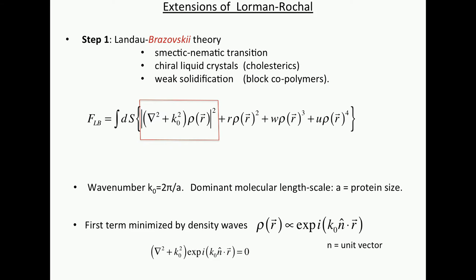And in fact, if you work with nabla squared plus k0 squared on this wave, you just bring down two factors of i k0. That is minus k0 squared, plus k0 squared, and you have 0. So you see immediately that this theory tells you the density is going to consist of waves. And these terms, these nonlinear terms, are going to tell you how they interact. So this is the standard way you look at crystallization.